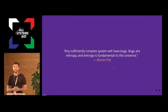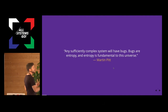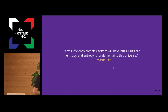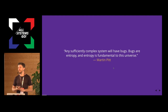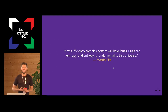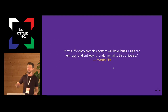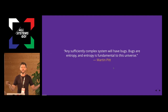First off, this is the gospel of Martin Pitt: any sufficiently complex system will have bugs. Bugs are entropy, and entropy is fundamental to the universe that we live in. If you don't have bugs in your software, your software is trivial. Really what we want to do is minimize the bugs that have a significant impact, knowing that there will always be bugs.